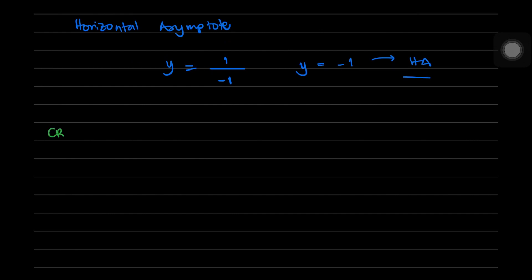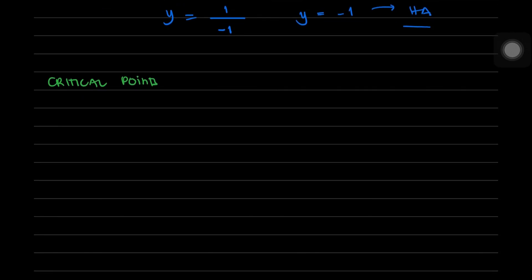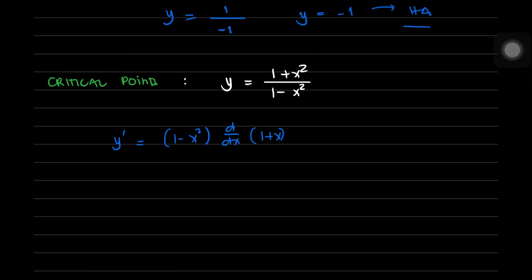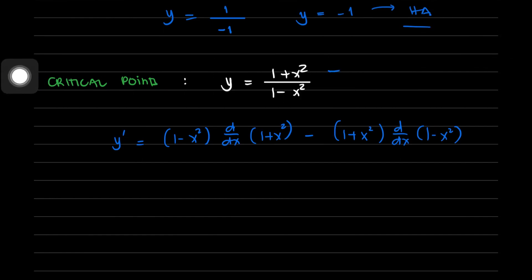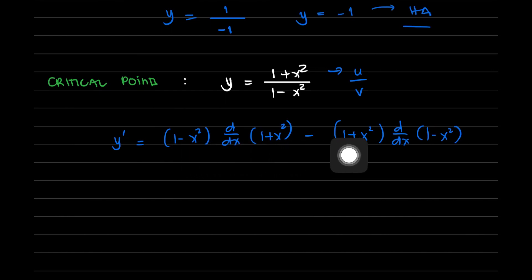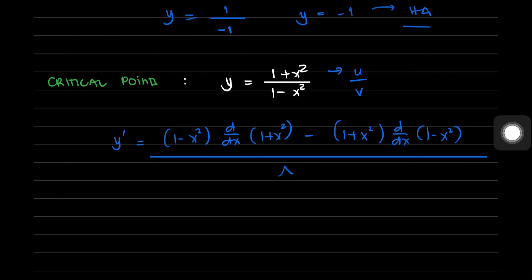The next step is to locate and classify the critical points. We solve for y prime using the quotient rule (v·du - u·dv)/v²: y' = [(1 - x²)(2x) - (1 + x²)(-2x)] all over (1 - x²)².